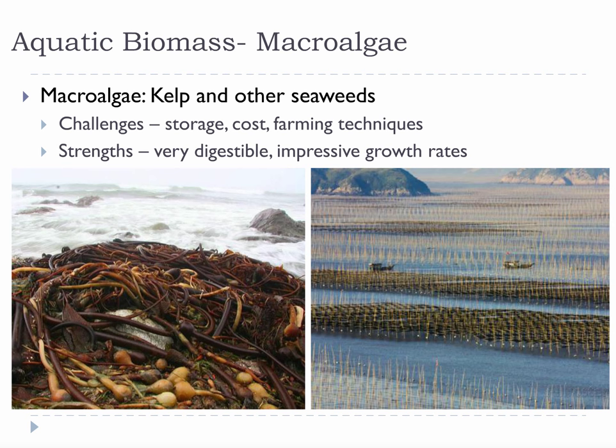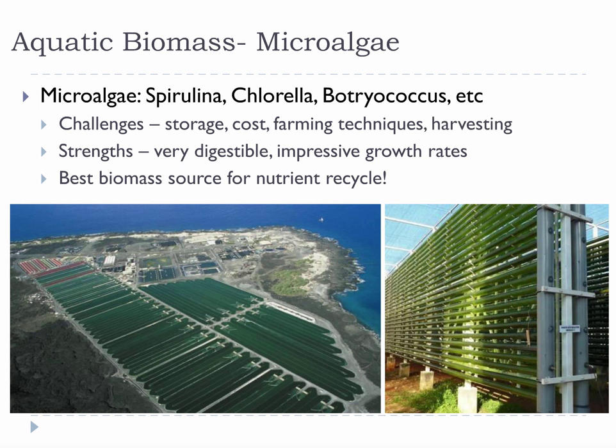As a potential source of biomass for bioenergy, it has some interesting attributes. It grows very, very fast, with kelp being one of the fastest-growing photosynthetic organisms on Earth. It is also very digestible because it has no lignin, and it has the potential to be grown at high densities in very small areas due to its ocean habitat. However, at the moment it is quite expensive, stores badly, and isn't cultivated at the scales that would be necessary for it to make sense as a bioenergy crop.